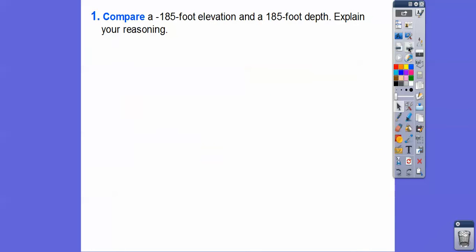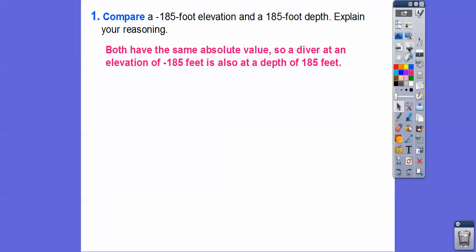Let's compare a negative 185 foot elevation and a 185 foot depth and explain the reasoning. Both have the same absolute value. A diver at an elevation of negative 185 feet is also at a depth of 185 feet. When you're talking about depth answers, it's the absolute value of your elevation answers.